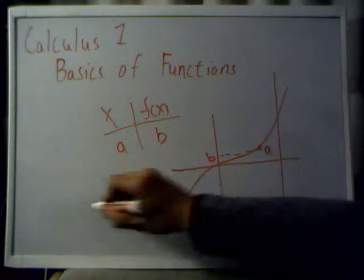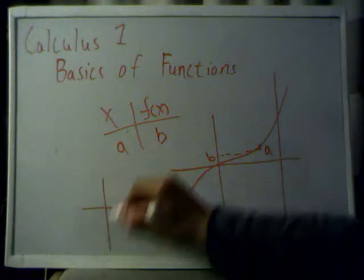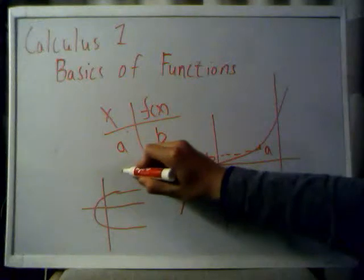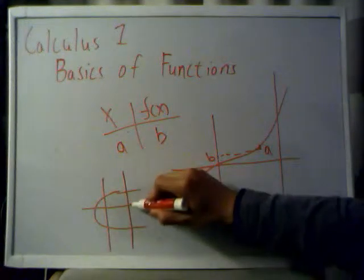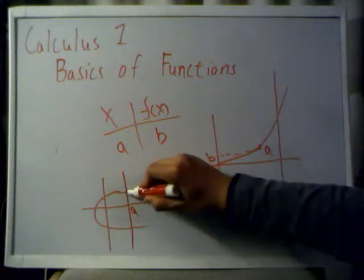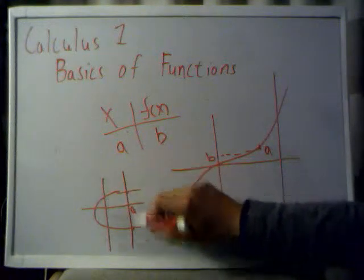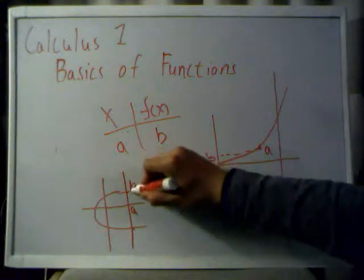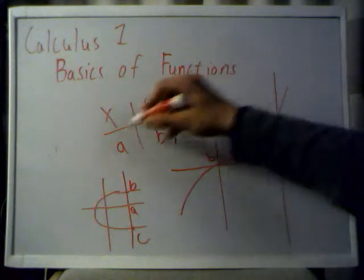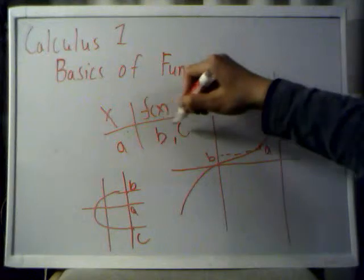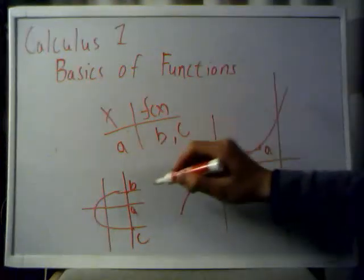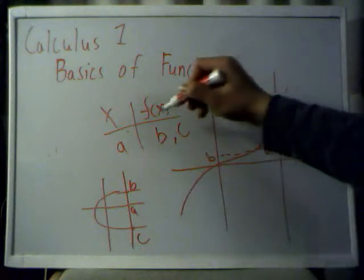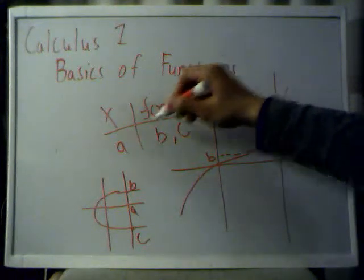So let's say for this example, you have this kind of curve. Clearly you can see that if you draw a vertical line through here — we'll call this point a — you can see that this line passes through two points on the curve. Therefore, you have a case where, let's say this is b and this is c, for this value of a, you have two f of x values.